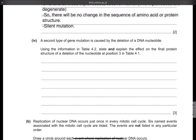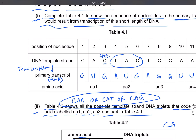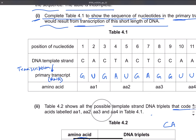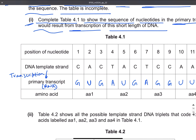Another type of gene mutation is caused by the deletion of a DNA nucleotide. Using the information in table 4.2, state and explain the effect on the final protein structure of a deletion of the nucleotide at position 3. If the nucleotide at position 3 is deleted, the new sequence of DNA becomes CAT, ACT, CCA, AC...